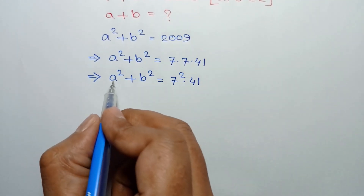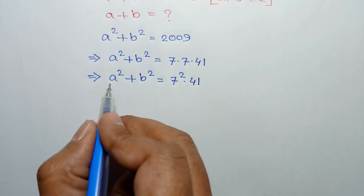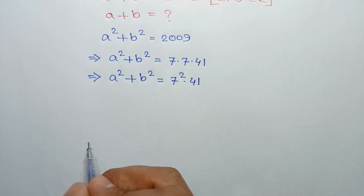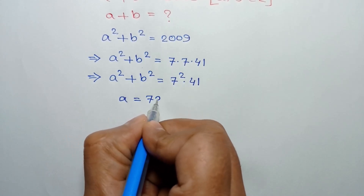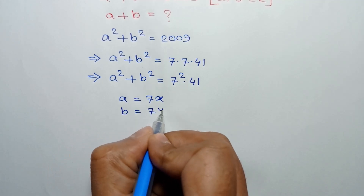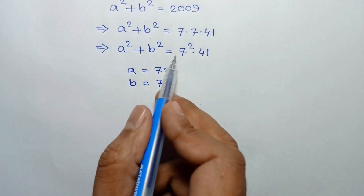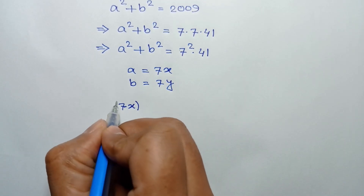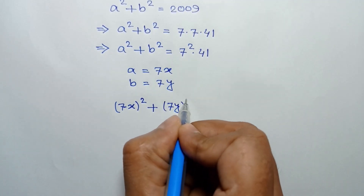Now, since the sum of two square numbers is a product of a square number, both A and B are divisible by 7. So consider A is equal to 7x and B is equal to 7y. Substituting these values of A and B, we can write 7x squared plus 7y squared.